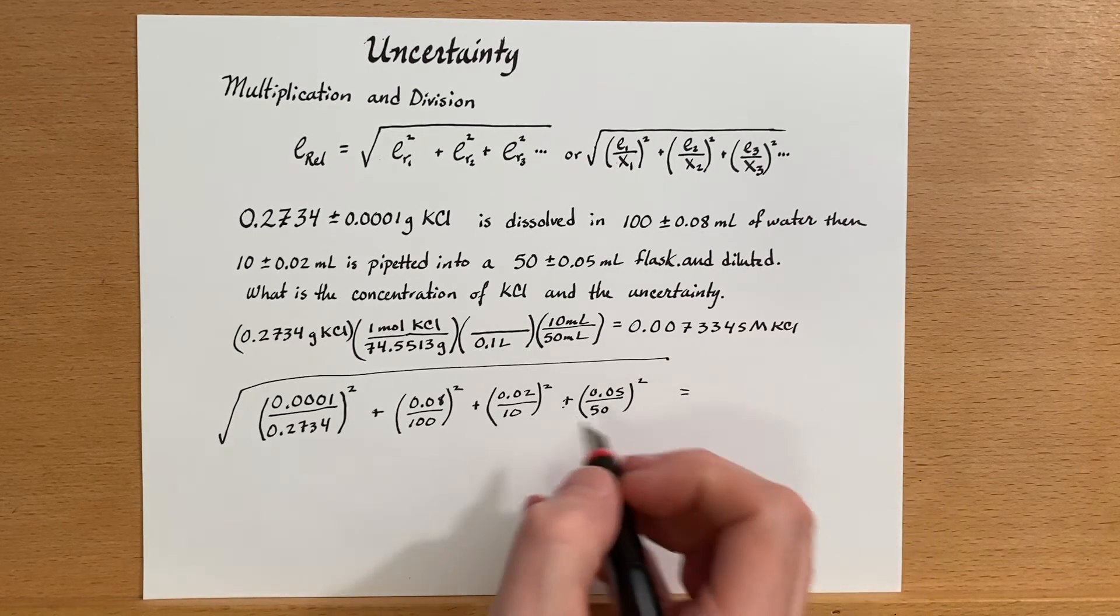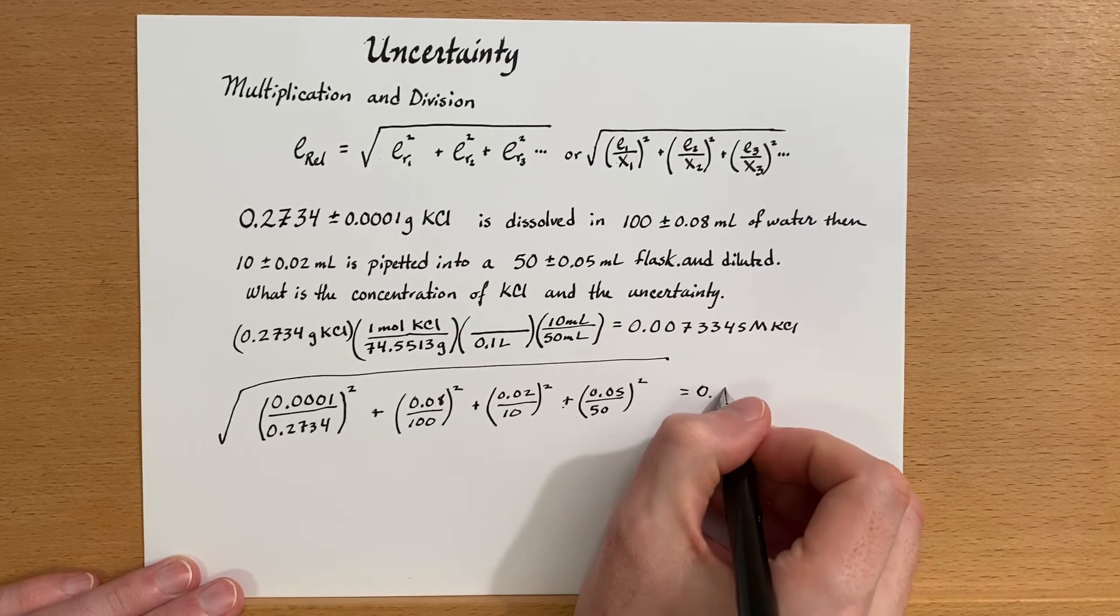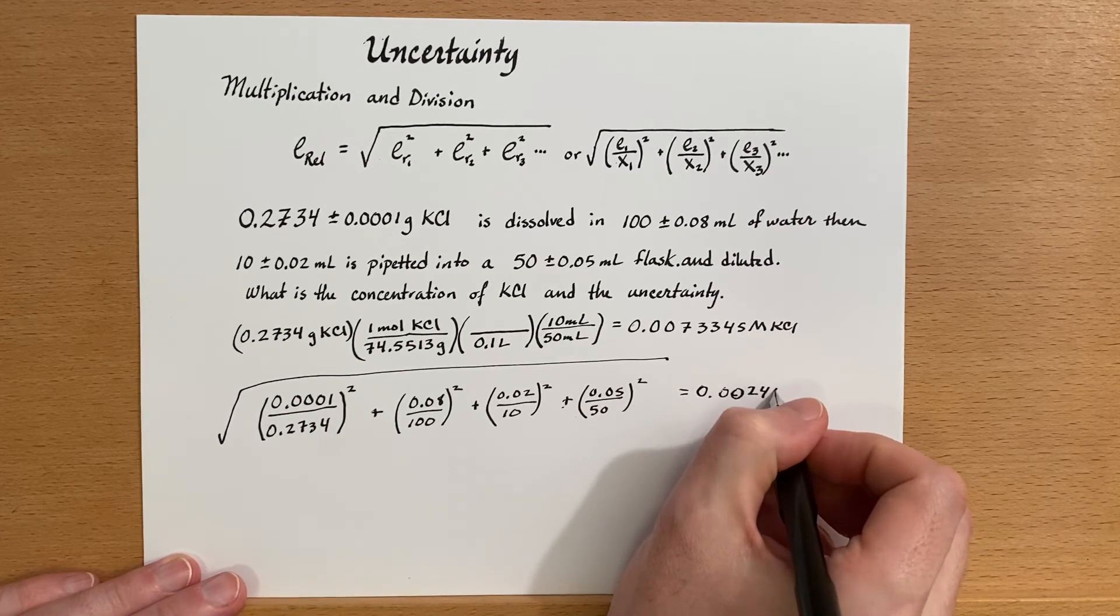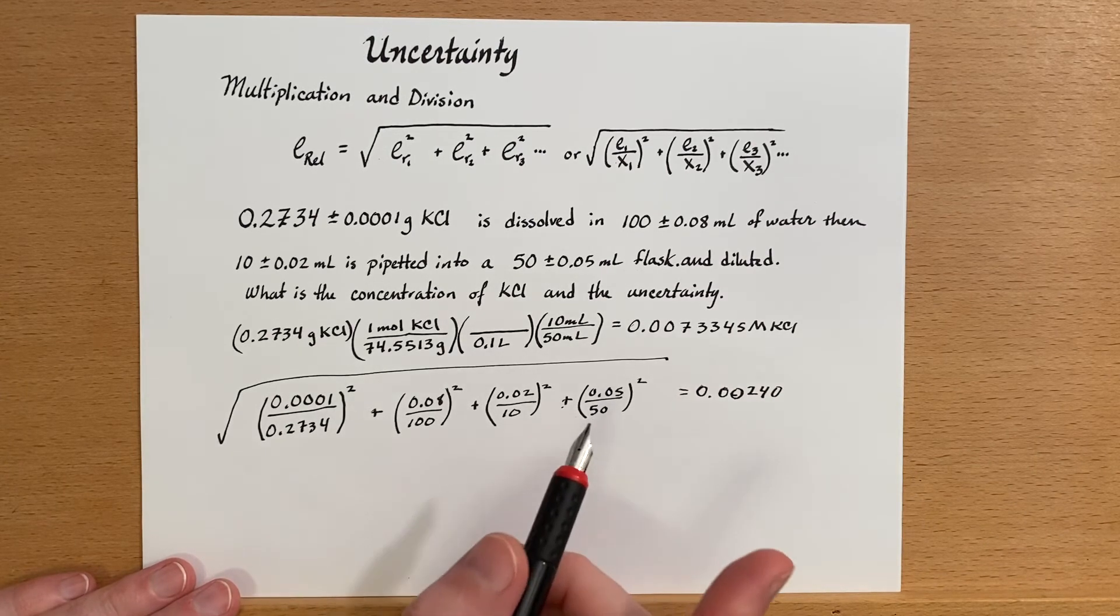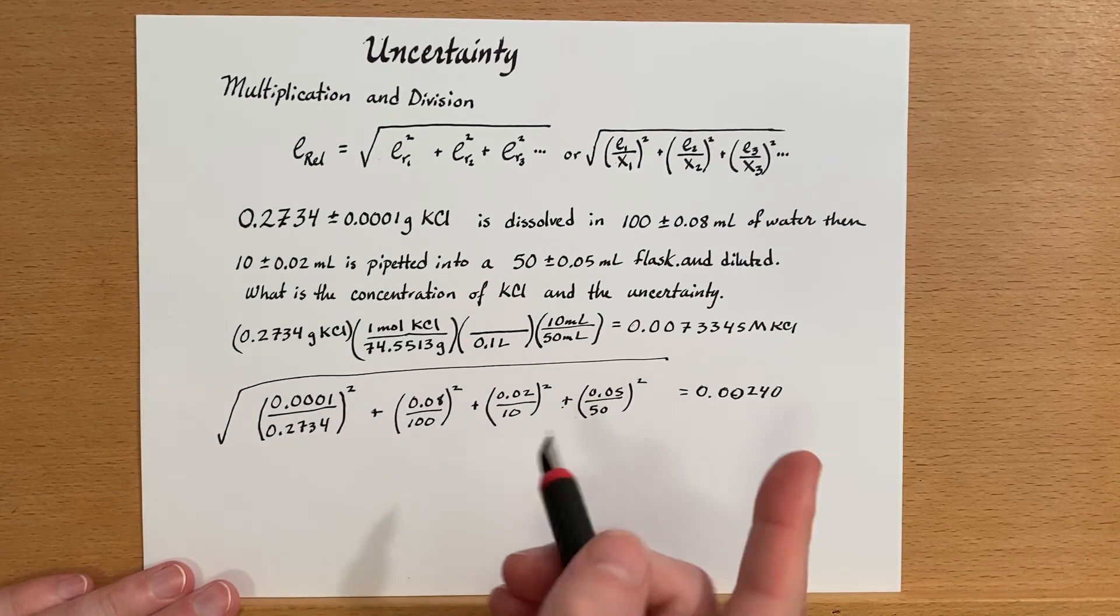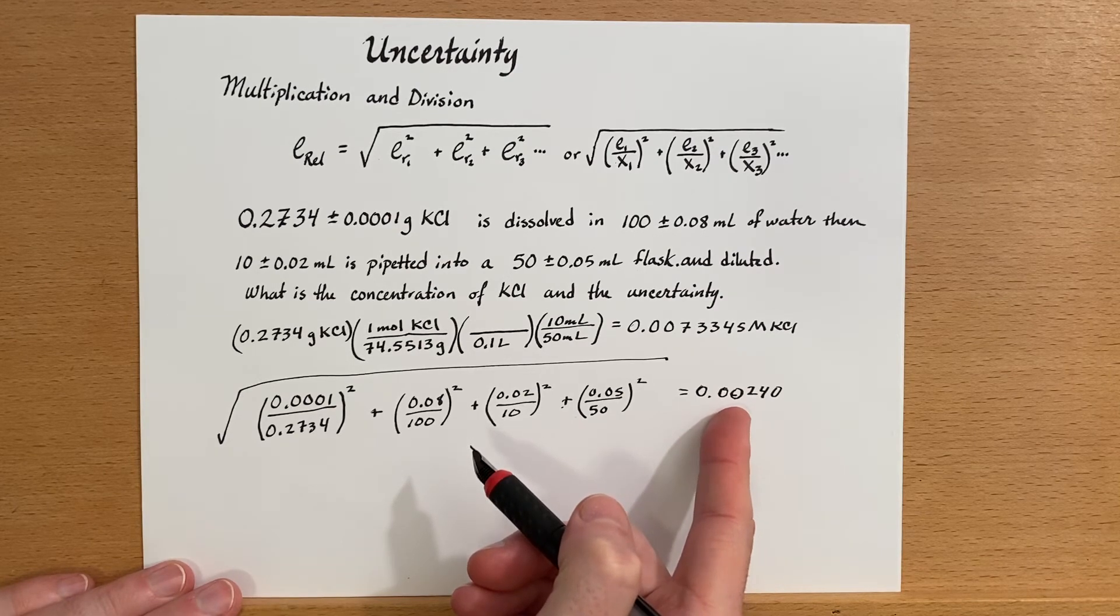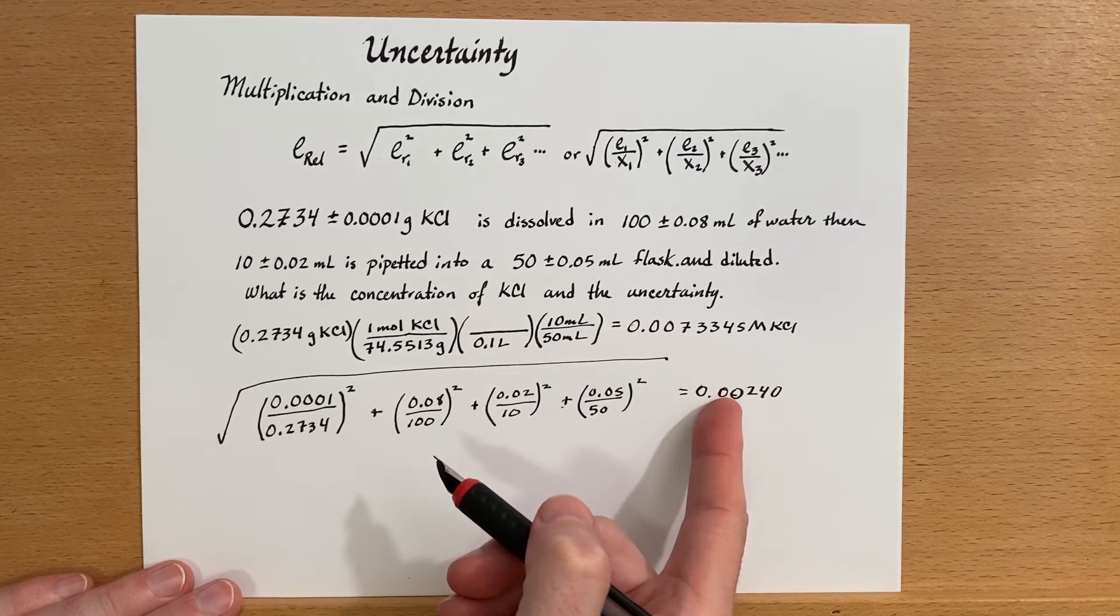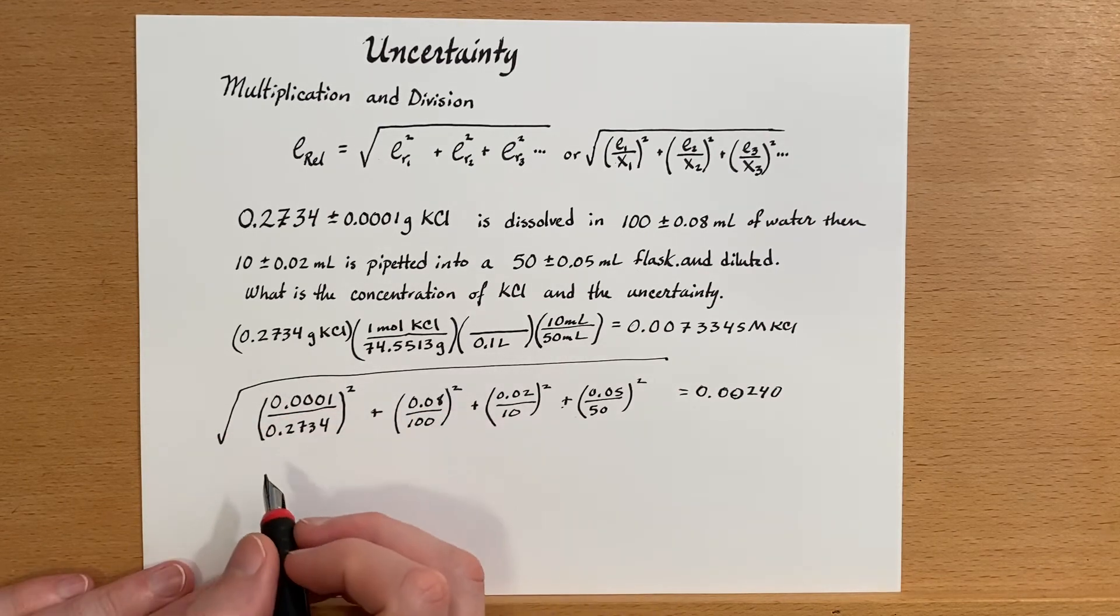Anyway, we add that up, take the square root, and I'm getting 0.00240 for my relative error. Now, I have relative errors in here. This is a relative error. So in order to get an absolute error, I'm going to have to multiply my concentration by the relative error. That will get back out absolute error. So then I can actually report my plus and minus. So I'm going to do that right down here.